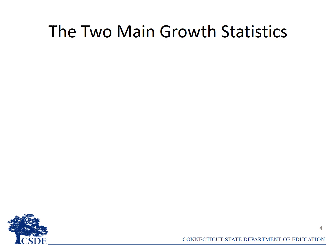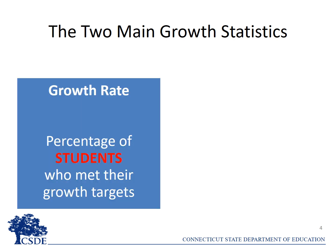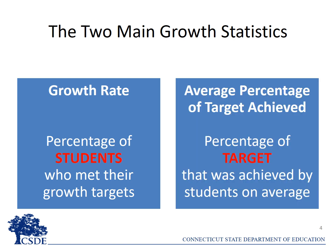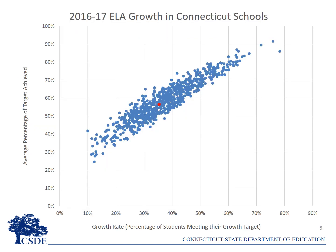To recap: the growth rate is the percentage of students who met their growth targets. The average percentage of target achieved is a percentage of the target that was achieved by the students on average — it's not a percentage of students. The average percentage of target achieved and the growth rate are closely related: as students grow on the vertical scale, they'll achieve a greater percentage of their respective targets and more students will meet or exceed their growth targets.